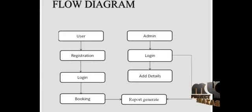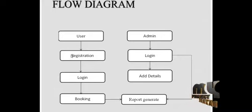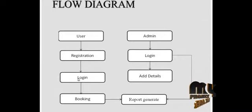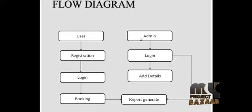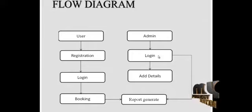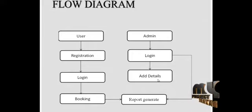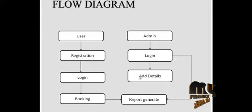Flow Diagram. The user will register with their particular details and login, and booking will be made. The admin will login, add the details, and generate the report.